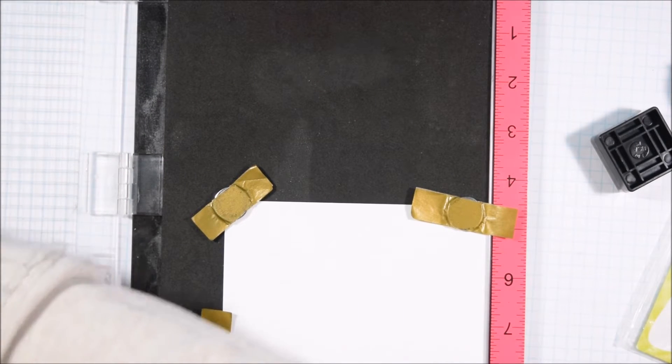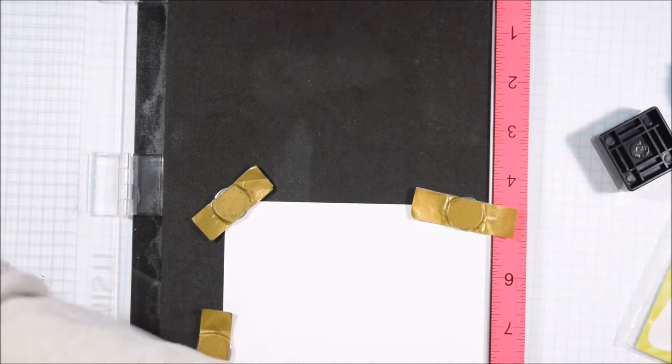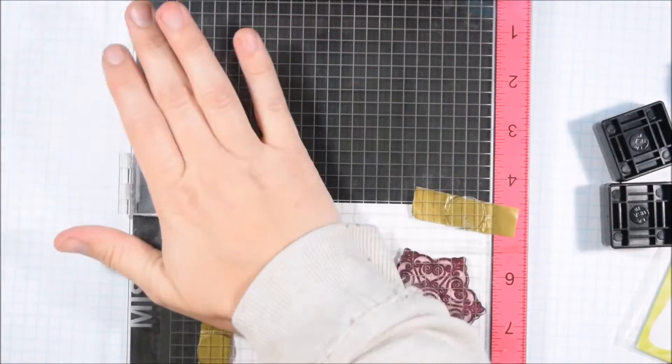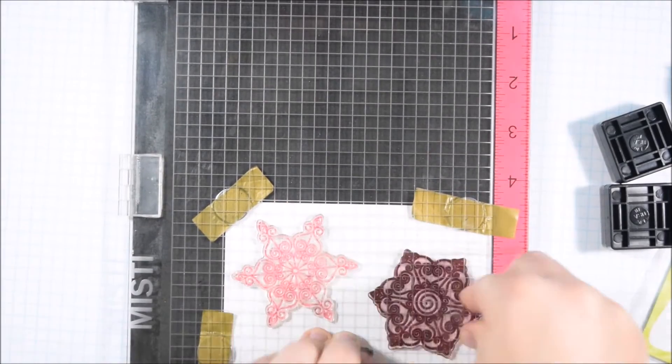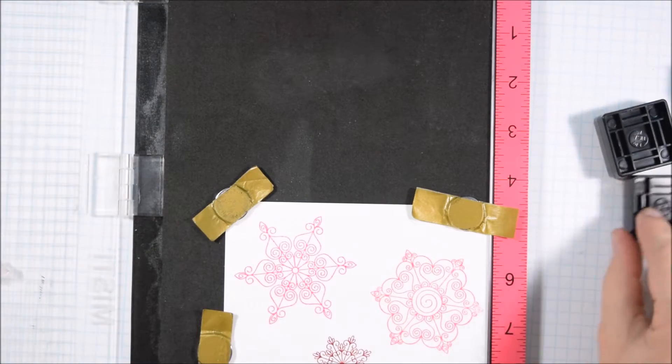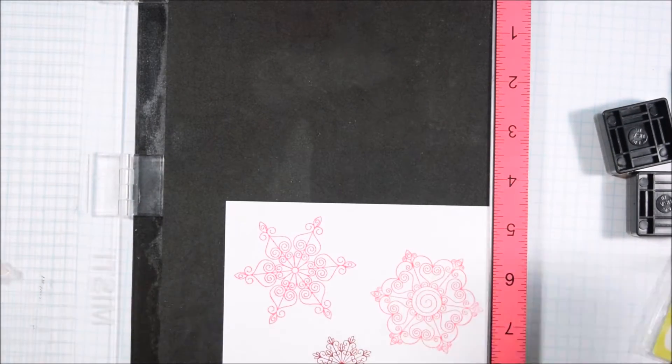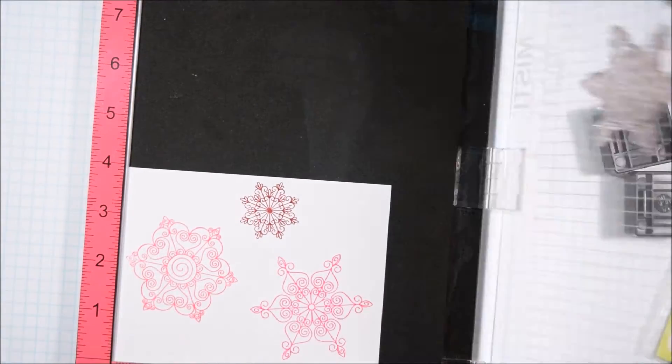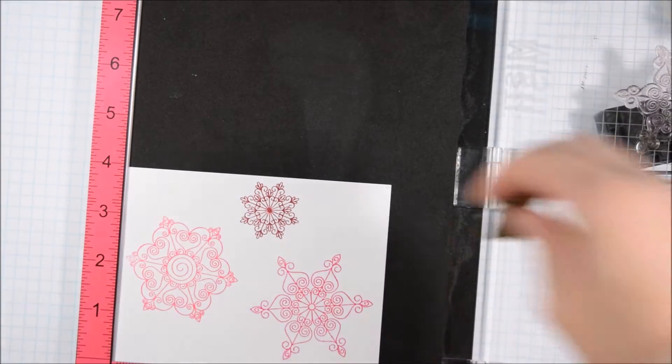I believe there are addresses in Canada and in the United States, but definitely check that out. For today's card I am using the Beautiful Blizzard Snowflakes and I'm using all six of the snowflakes featured in the set. Beautiful Blizzard is one of my personal favorite stamp sets from Newton's Nook Designs. I just think the snowflakes are really unique and gorgeous.